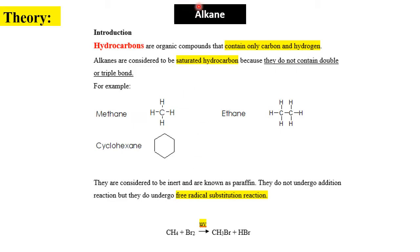First, let's look at the introduction and theory related to alkane. Alkane is a hydrocarbon — an organic compound that contains only carbon and hydrogen atoms. Alkanes are considered to be saturated hydrocarbons, meaning they contain only single bonds. Please take note: saturated hydrocarbon means only single bonds.